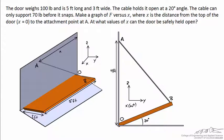In this problem we have a door that weighs a hundred pounds and is five feet long and three feet wide. There's a cable that holds it open at a twenty degree angle. The cable can only support seventy pounds before it snaps.